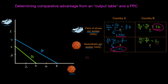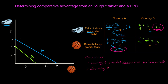So with this information, we can draw some conclusions. Country A should specialize in basketball production because it can produce basketballs at a lower opportunity cost than country B. Country B should specialize in shoe production due to its lower opportunity cost of one basketball per pair of shoes, compared to 1.33 basketballs per pair of shoes in country A.